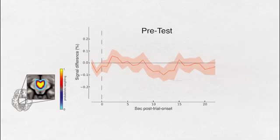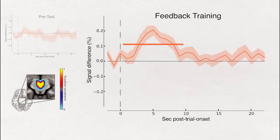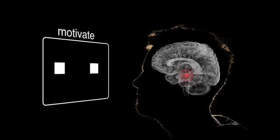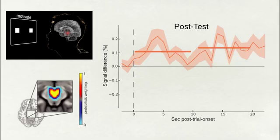During training, people did increase midbrain activation, but we expected that because feedback itself has been associated with dopamine responses. The critical result came next. When we removed the feedback and asked participants to motivate themselves using the strategies that worked best for them, they were able to consistently activate their own midbrain.